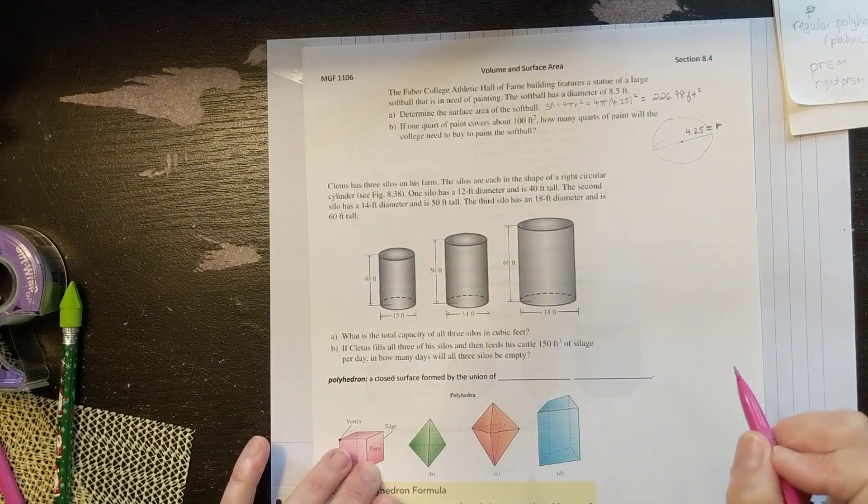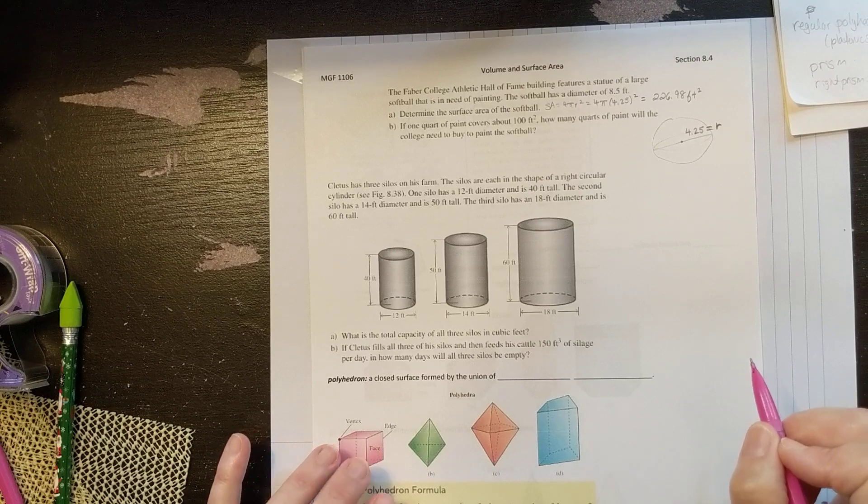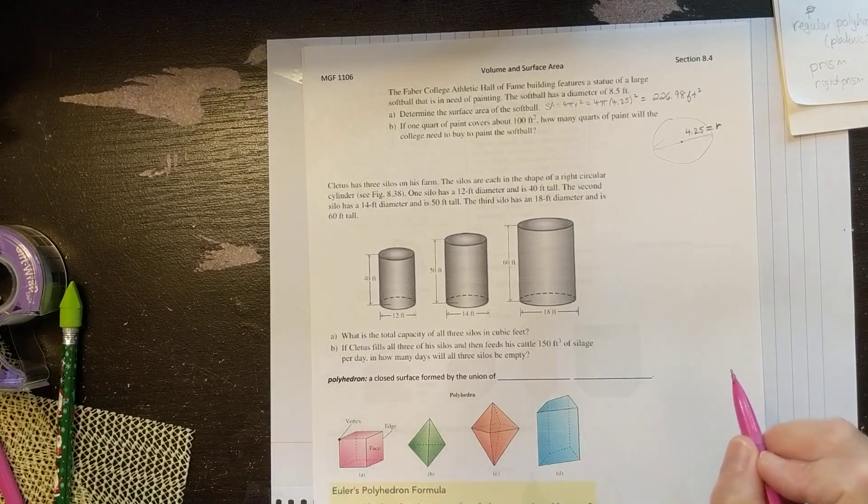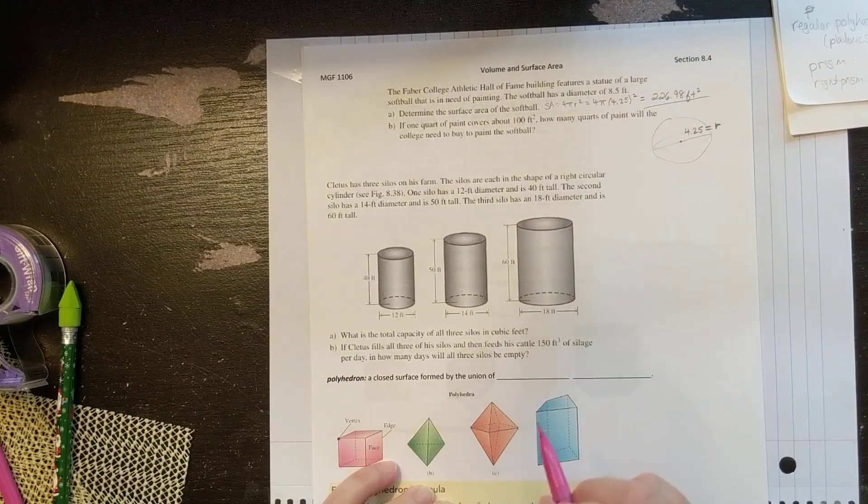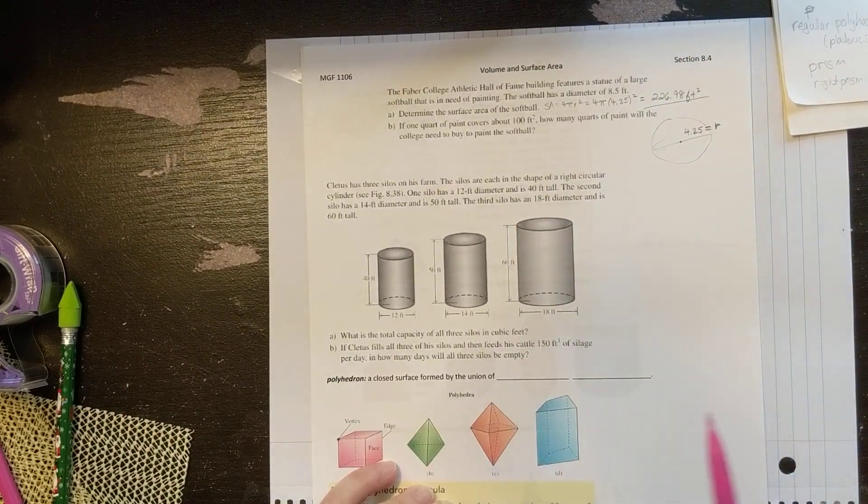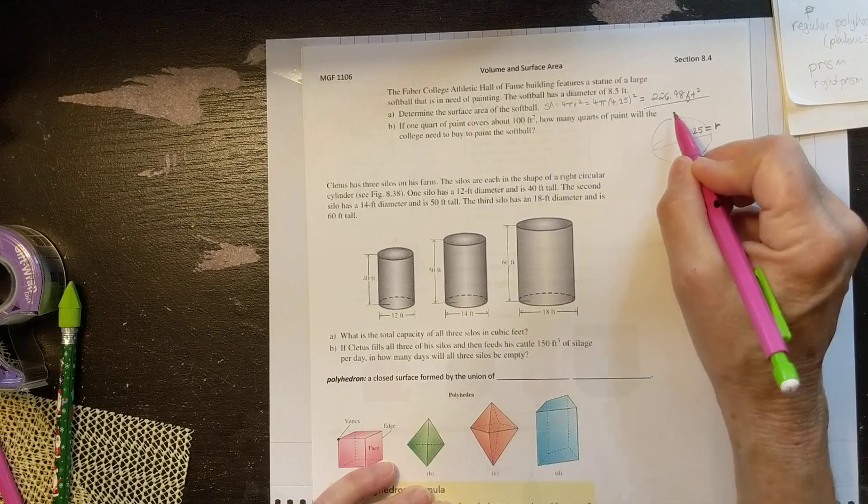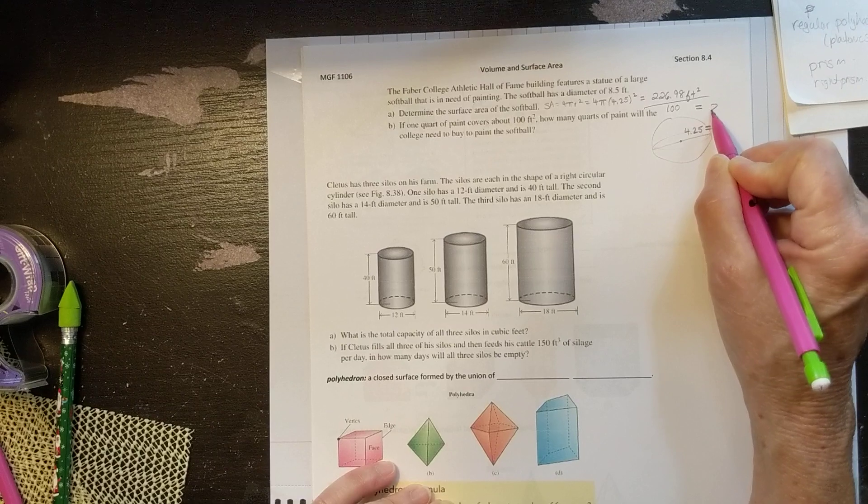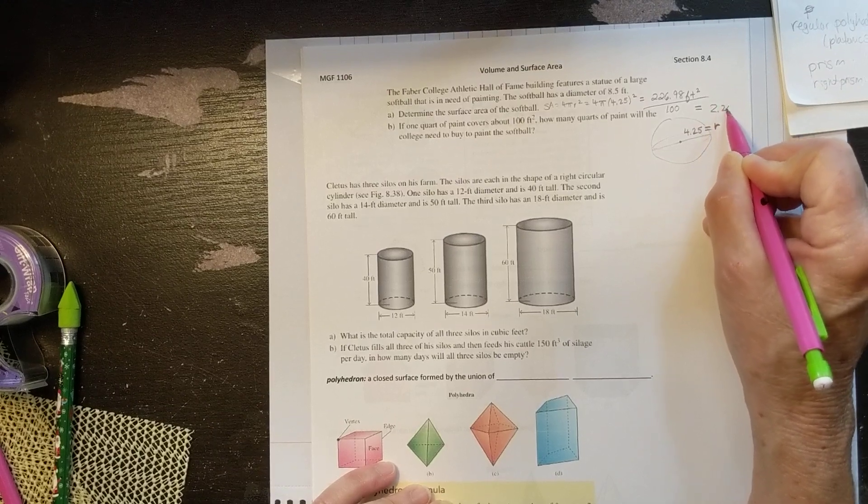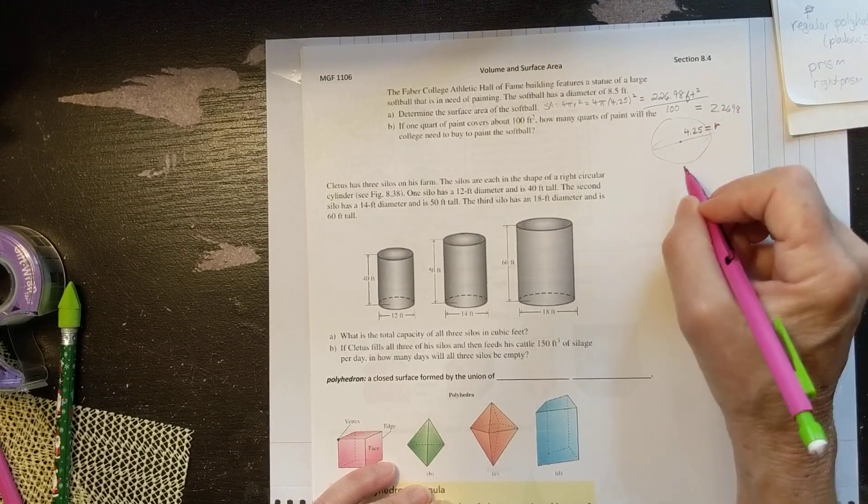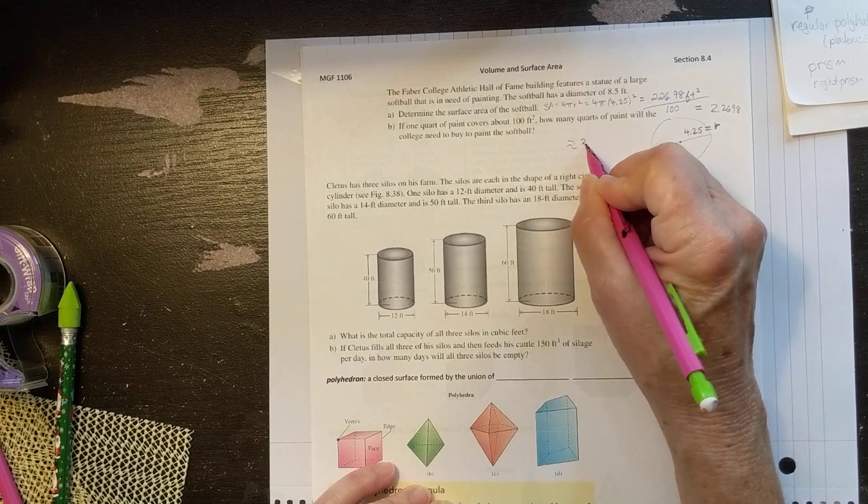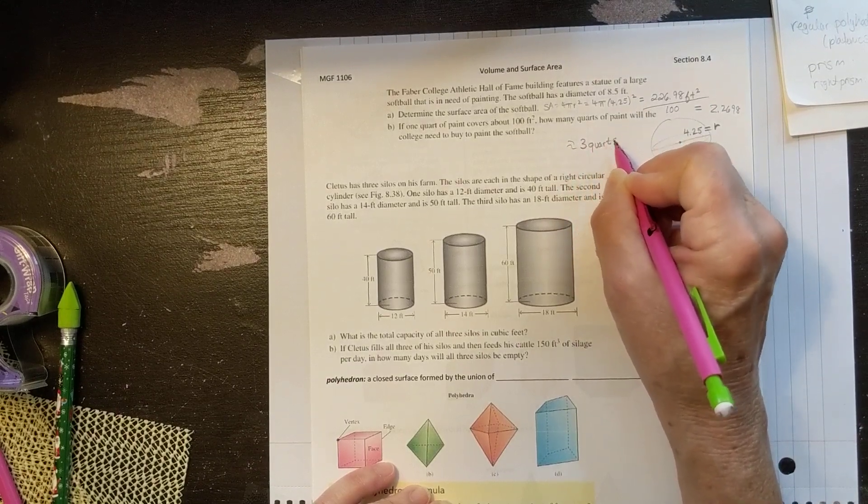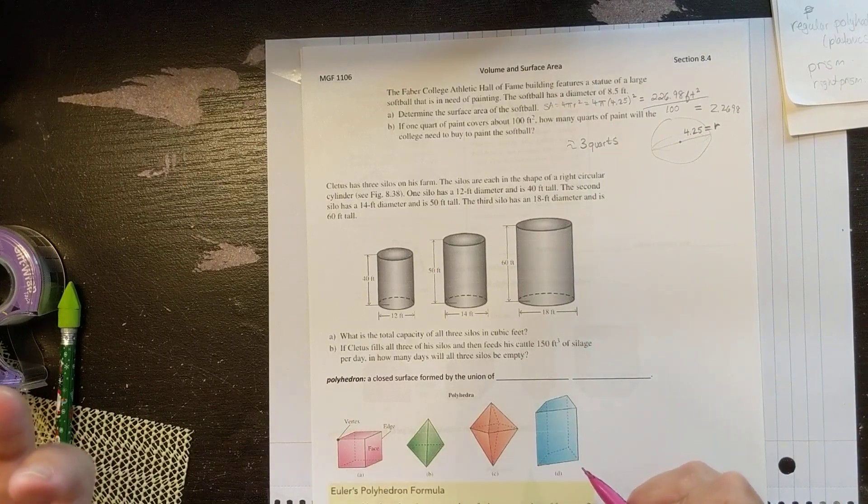If one quart of paint covers about 100 square feet, how many quarts of paint does she need? Well, we need this much coverage and each quart covers 100 square feet. So we're going to take this and divide it by 100. That gives us 2.2698. So basically we're going to round up and say we need three quarts of paint to cover the softball.